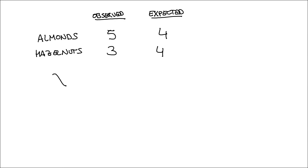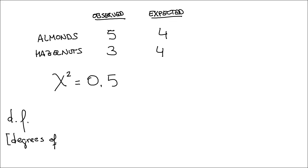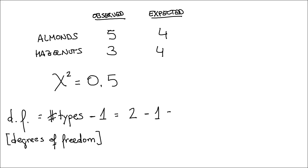Let's go back to our example. We have the observed values and the expected values. We also calculated our chi-square statistic. We need another thing — at this stage you surely heard about degrees of freedom. We need to know the degrees of freedom in order to calculate the p-value. In a chi-square test, this is the number of types minus one. In our case, we have two types — almonds and hazelnuts — therefore we have one degree of freedom.